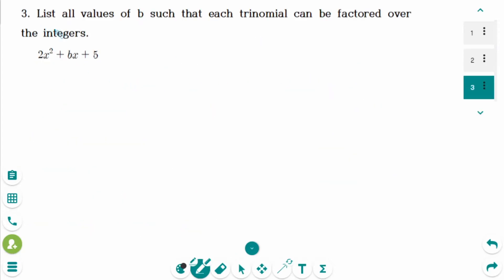Number 3. List all values of b such that this trinomial can be factored over the integers: 2x squared plus bx plus 5. In this question, I will be using the cross method. So 2x times x makes 2x squared. 5 times 1 makes 5.